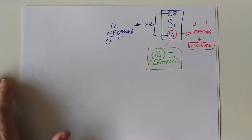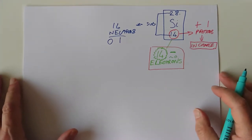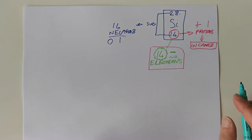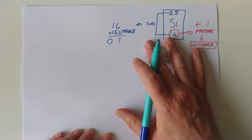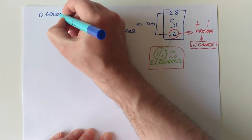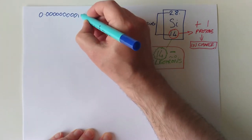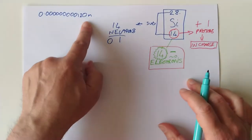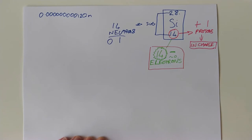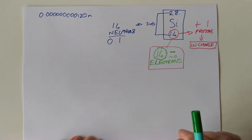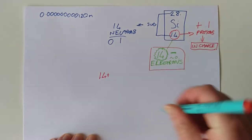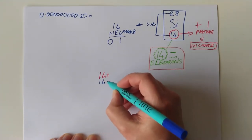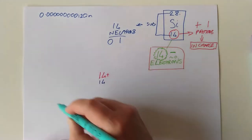Atoms are so ridiculously small. A hydrogen atom is about 120 picometers — that's 0.000000000120 of a meter. That's how small atoms are, which is why we can't really see them. Previously we said the 14 protons and 14 neutrons sit in the center in an area called the nucleus, and I said the electrons were just a big fuzzy cloud around that. I'm going to retract that statement.